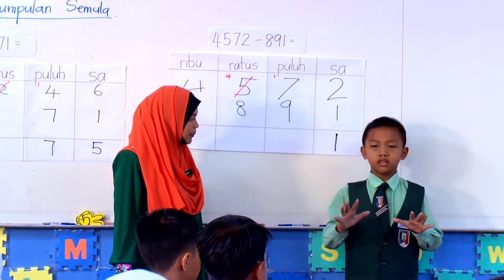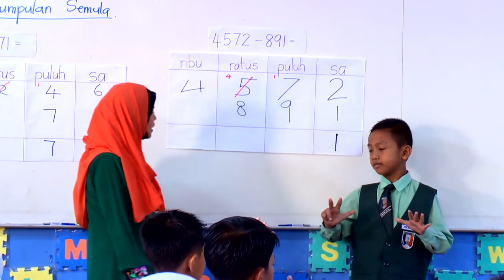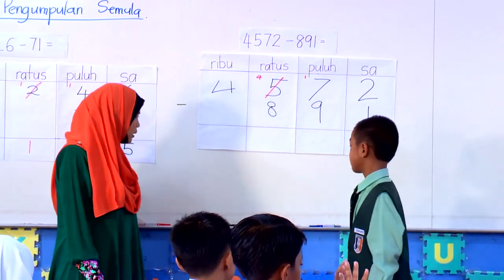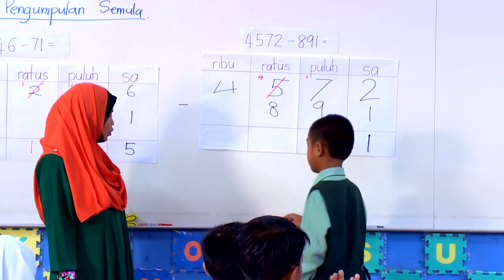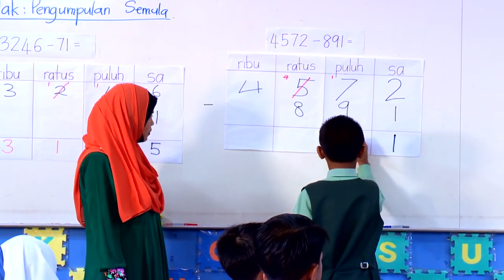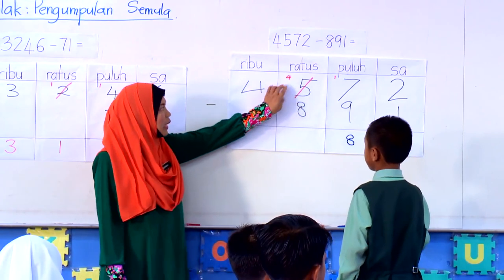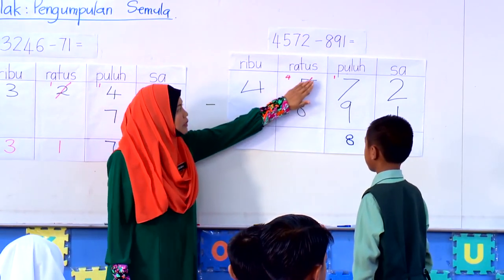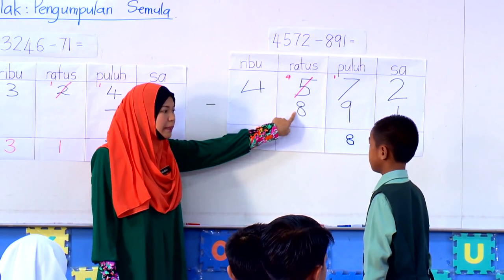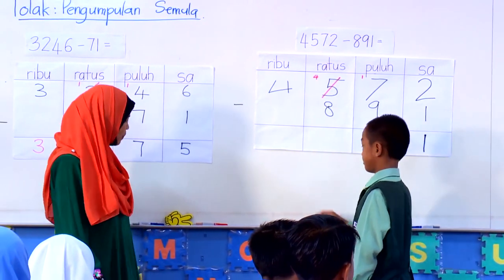Tunjukkan pada kawan awak: 8, 9. Berapa jari yang tinggal masih terbuka? 8. Tuliskan jawapan kamu di situ. Seterusnya, Zuhafizi, 4 ni sekarang dah jadi — kita dah tinggal 4. 4 boleh tolak dengan 8? Tak boleh. Apa yang kamu perlu lakukan?